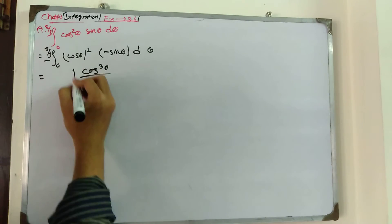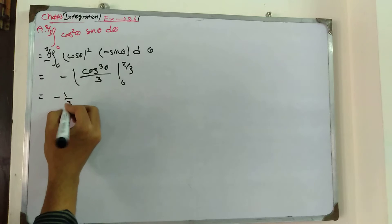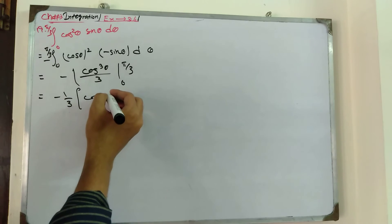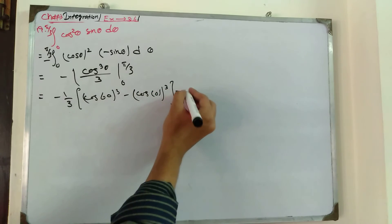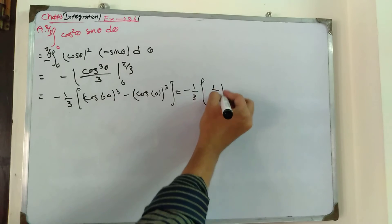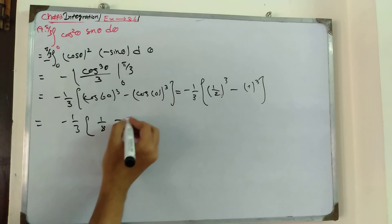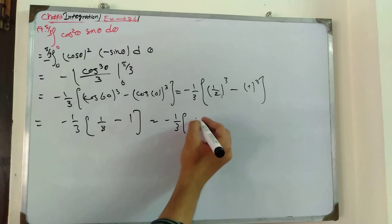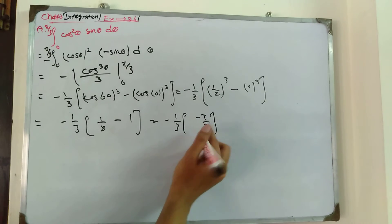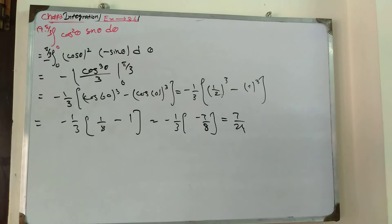Applying the power rule: the integral gives [−cos³θ / 3] evaluated from 0 to π/3. Solving: −(1/3)[cos³(π/3) − cos³(0)] = −(1/3)[cos60°]³ − 1] = −(1/3)[(1/2)³ − 1] = −(1/3)[1/8 − 1] = −(1/3)(−7/8). This simplifies to 7/24. This is your answer.